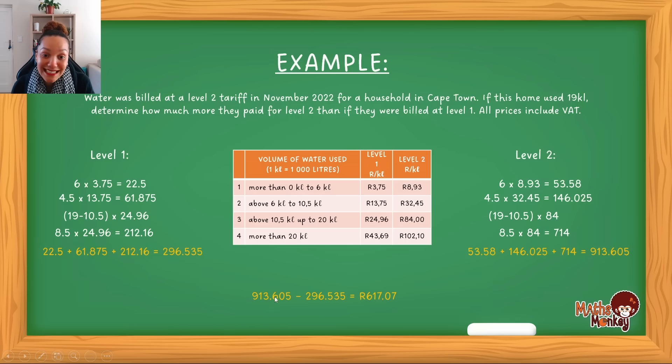So to get to the final answer, which is what they're asking, what is the difference between the two? I just take that answer and I subtract that one. So this person, this household would then have to be paying 617 rand and seven cents more being charged at level two tariffs versus at level one tariffs.